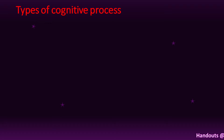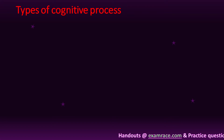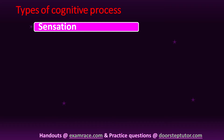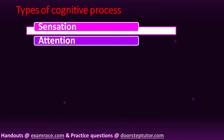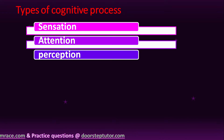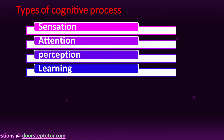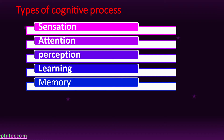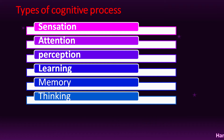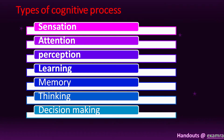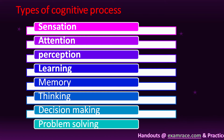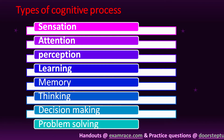There are many types of cognitive processes. The types are: sensation, attention, perception, learning, memory, thinking, decision making, and problem solving. We will now discuss all of these in detail.